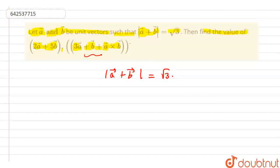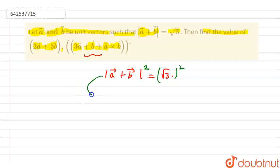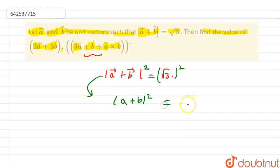So now we are going to square both sides. After squaring, this becomes the square of this thing and the square of this thing. If we further solve this, we can expand using the formula A plus B whole square, which is equal to A square plus B square plus 2AB.